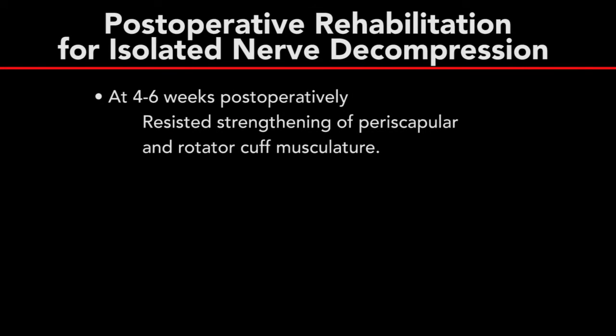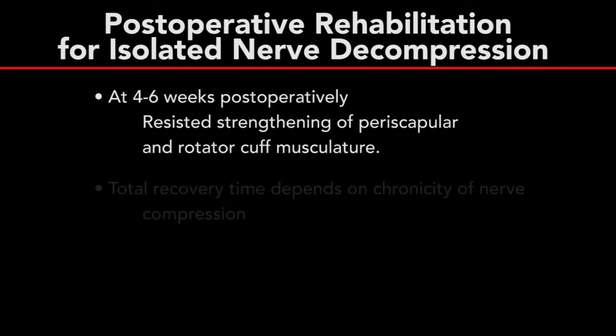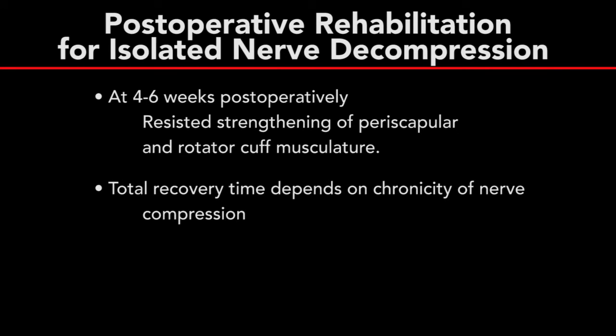At four to six weeks postoperatively, resisted strengthening of the periscapular and rotator cuff musculature is initiated. Notably, overall recovery time is dependent on the preoperative chronicity of nerve compression and the extent of muscular atrophy. In cases of nerve compression with additional pathology, such as a rotator cuff tear, the postoperative rehabilitation is adjusted based on the associated pathology.